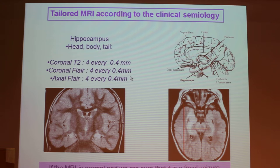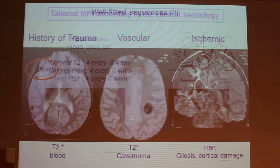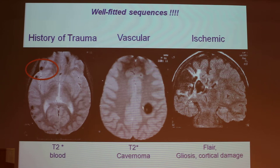You have to perform various slices for every operculum. You have to perform coronal FLAIR and axial FLAIR. If the MRI is normal, you have to add a supplementary sequence with T2 star. For example, if you have a history of trauma, you will see blood with the T2 star. If you don't see anything on the morphological MRI with FLAIR, T2, and T1, you perform a T2 star in order to find, for example, a cavernoma. And for ischemic gliosis, it is very important to have the FLAIR.